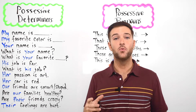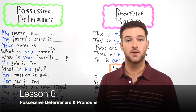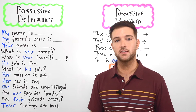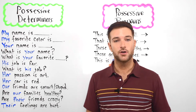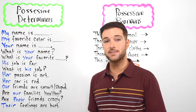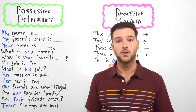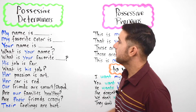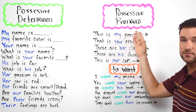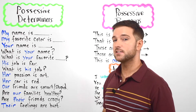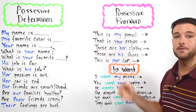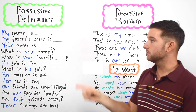Hello, all you English learners out there. Welcome to the sixth lesson in this course. My name is Oliver and I'm the instructor of this course, where I'm going to be teaching you the fundamentals of the English language and basic grammar. In today's lesson, we are going to be learning how to use pronouns to refer to possession and to belonging. There are two types of these pronouns: possessive determiners and possessive pronouns. We use possessive determiners before a noun, whereas we use possessive pronouns in place of a noun.